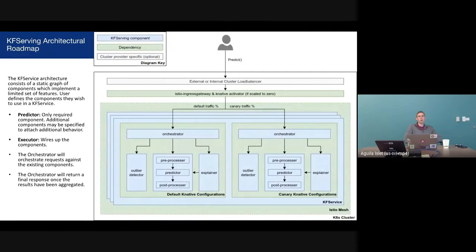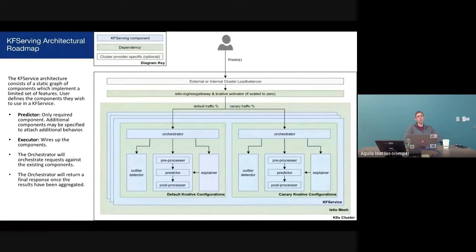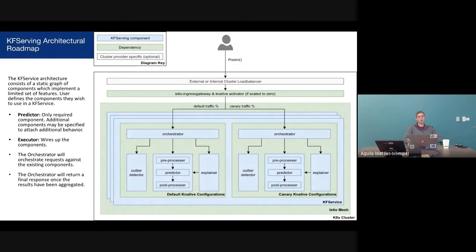This is how we've been thinking about what KF-Serving is from the development perspective. If you start at the top, that's where the user is, sending prediction requests. You have some sort of load balancer going into your cluster — maybe an internal or external load balancer going through some sort of gateway. Then you land into the Istio-Knative ecosystem, which handles getting you onto their fabrics.